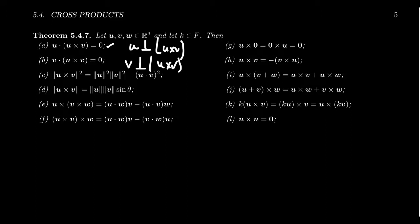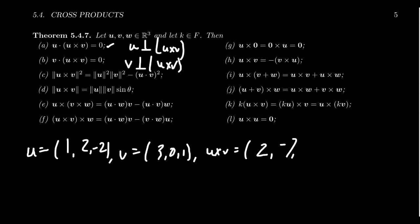And so if we go back to the example we saw beforehand, if you took U to be the vector 1, 2, negative 2, you take V to be the vector 3, 0, 1. Then we calculated that cross product U cross V to be the vector 2, negative 7, negative 6.